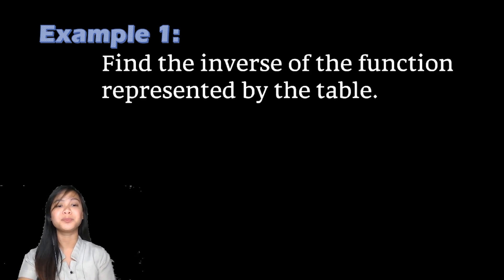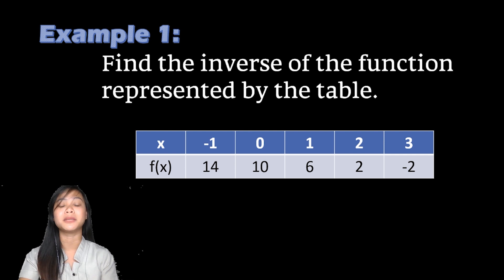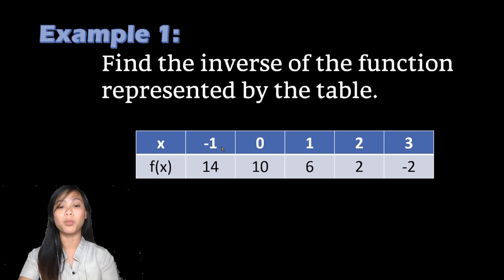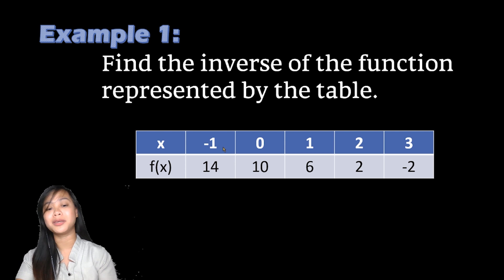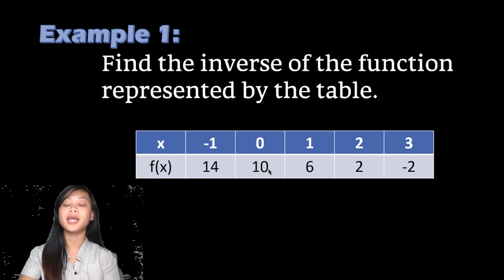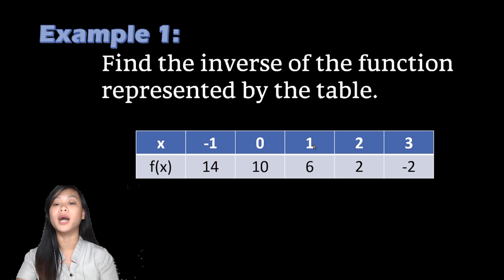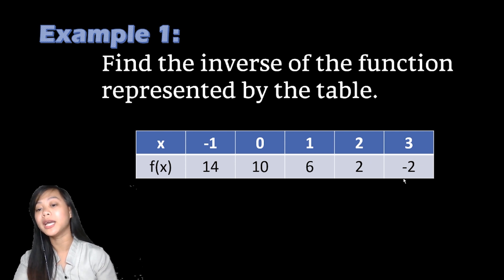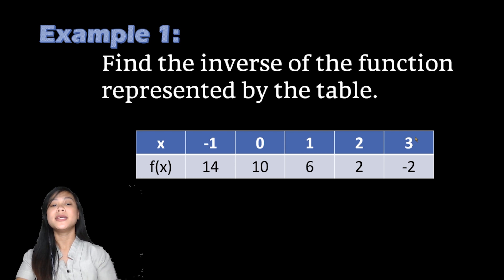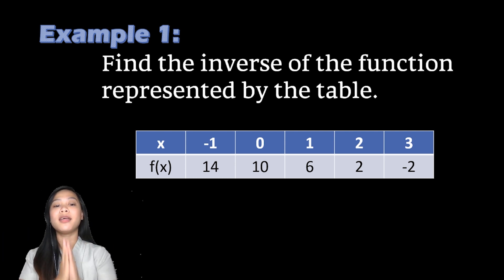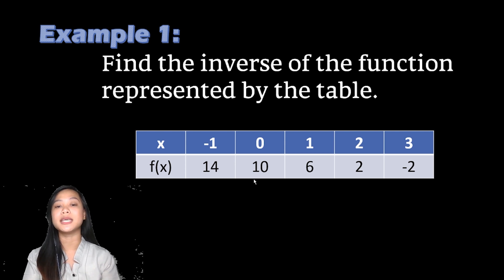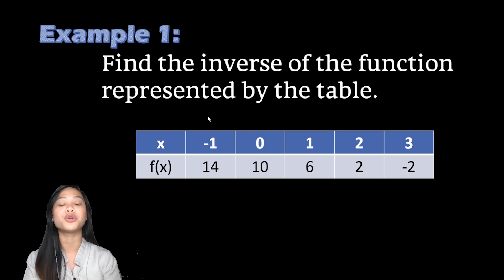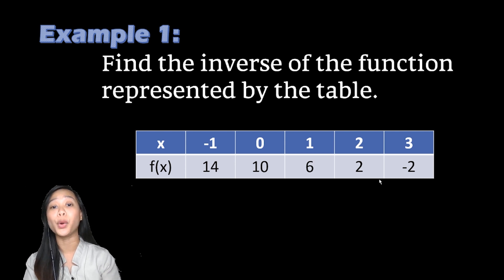For Example 1, find the inverse of the function represented by the table. We have x-values of negative 1, 0, 1, 2, and 3. Negative 1 corresponds to f(x) = 14, 0 corresponds to 10, 1 to 6, 2 to 2, and 3 to negative 2. To get the inverse, you just need to swap the x-values to become the f(x) values and the f(x) values to become the x-values.